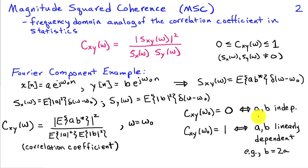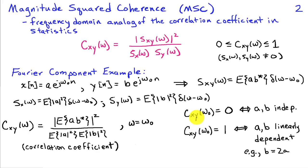Clearly, if a and b are independent or uncorrelated, then the numerator is going to be zero and the magnitude squared coherence will be zero. On the other hand, if a and b are perfectly linked — linearly dependent, for example, if b equals two times a — then the magnitude squared coherence will be exactly equal to unity. Values between zero and one reflect different degrees of correlation or dependence between a and b. So the magnitude squared coherence is an important tool for assessing the relationship between signals in the frequency domain. We can think of it at each frequency as a correlation coefficient involving the Fourier coefficients associated with that frequency.